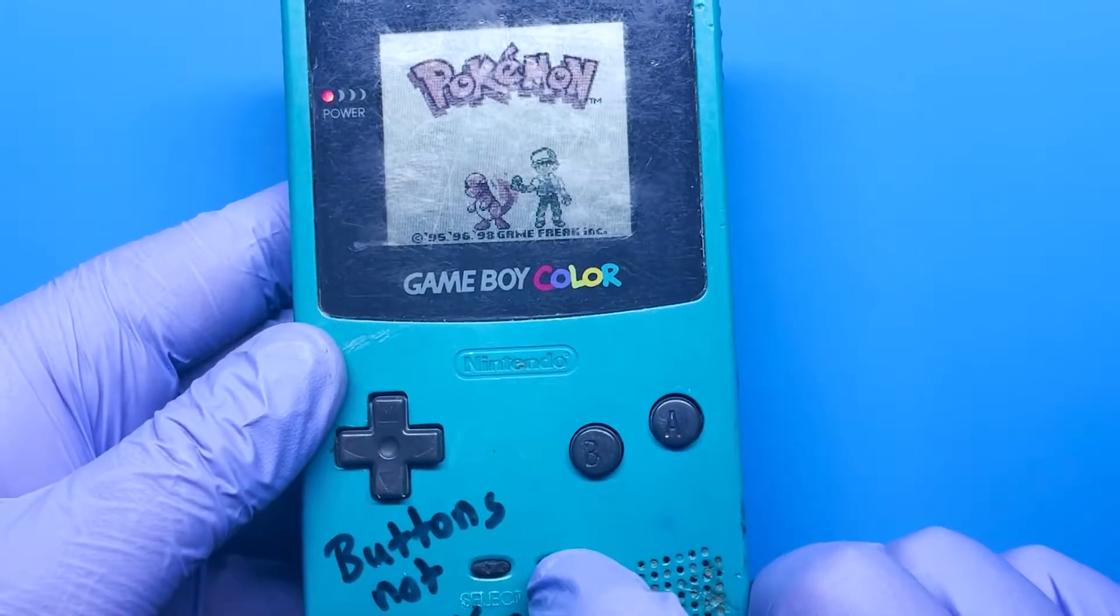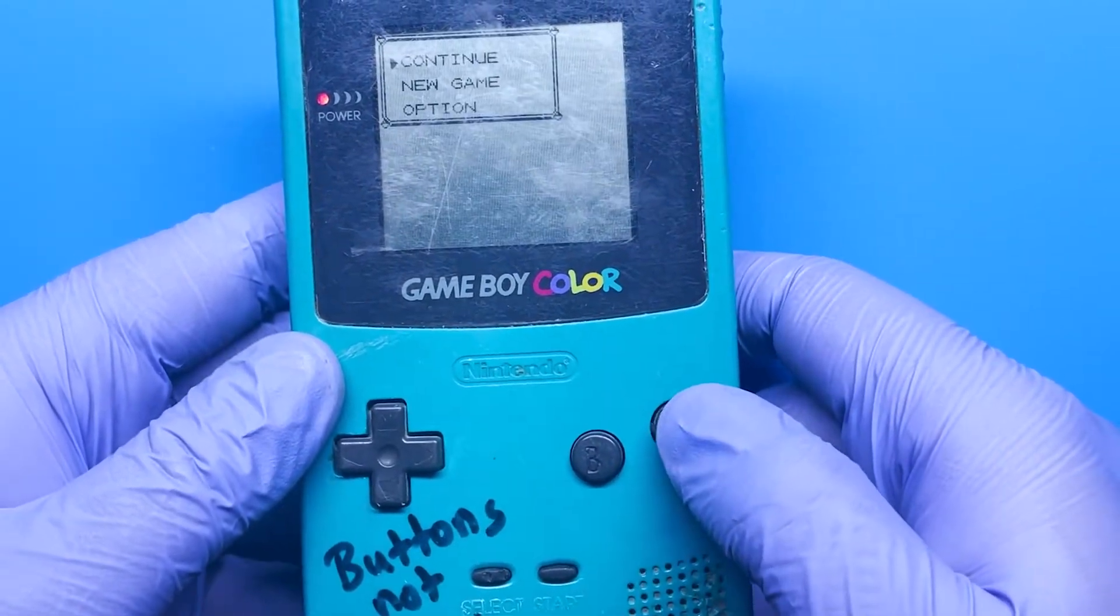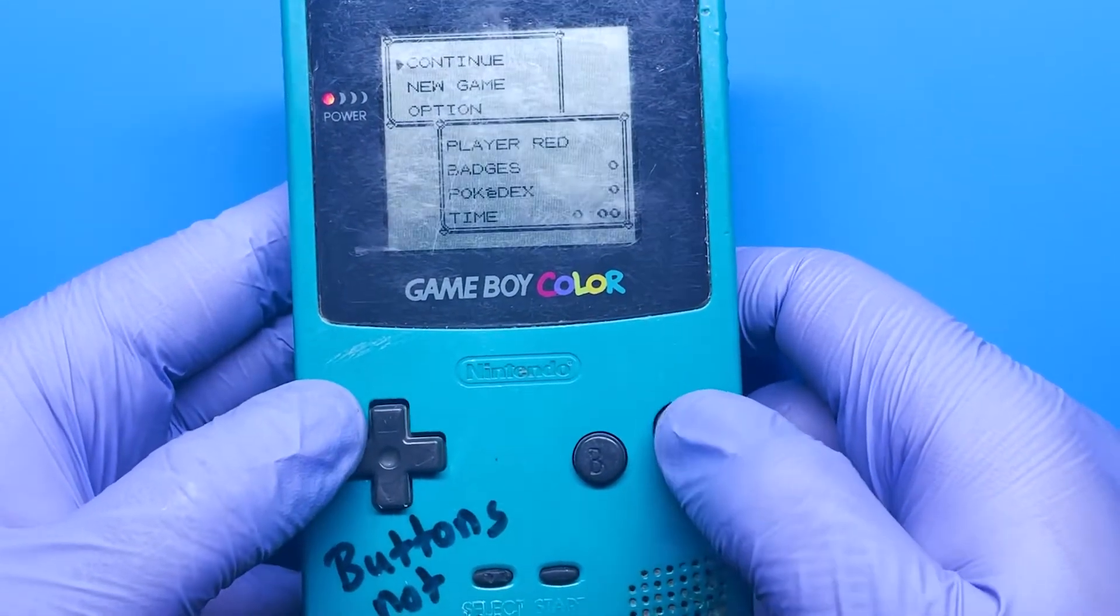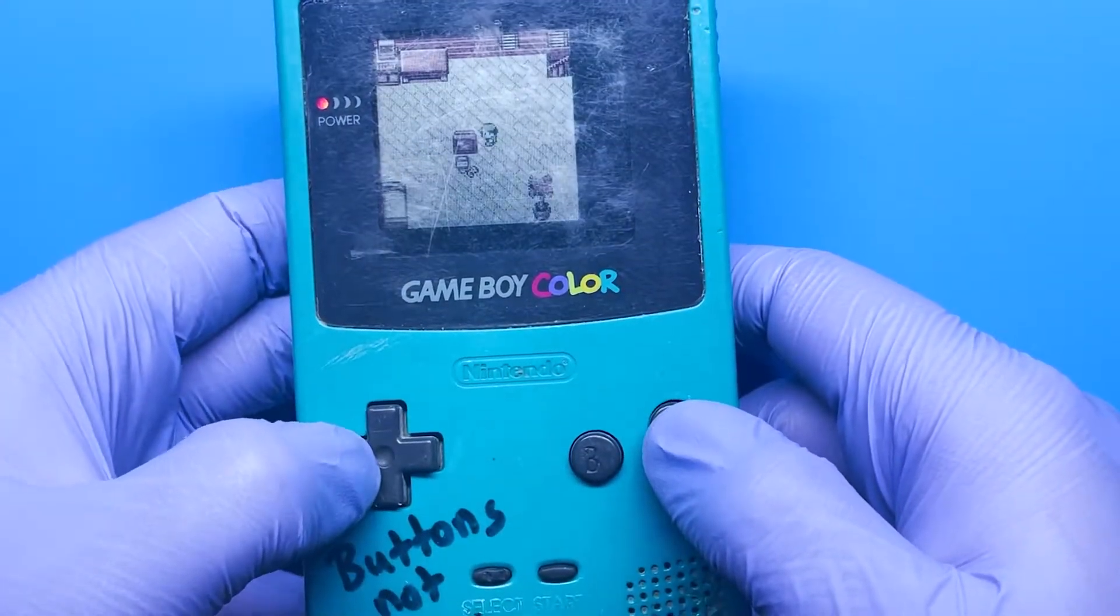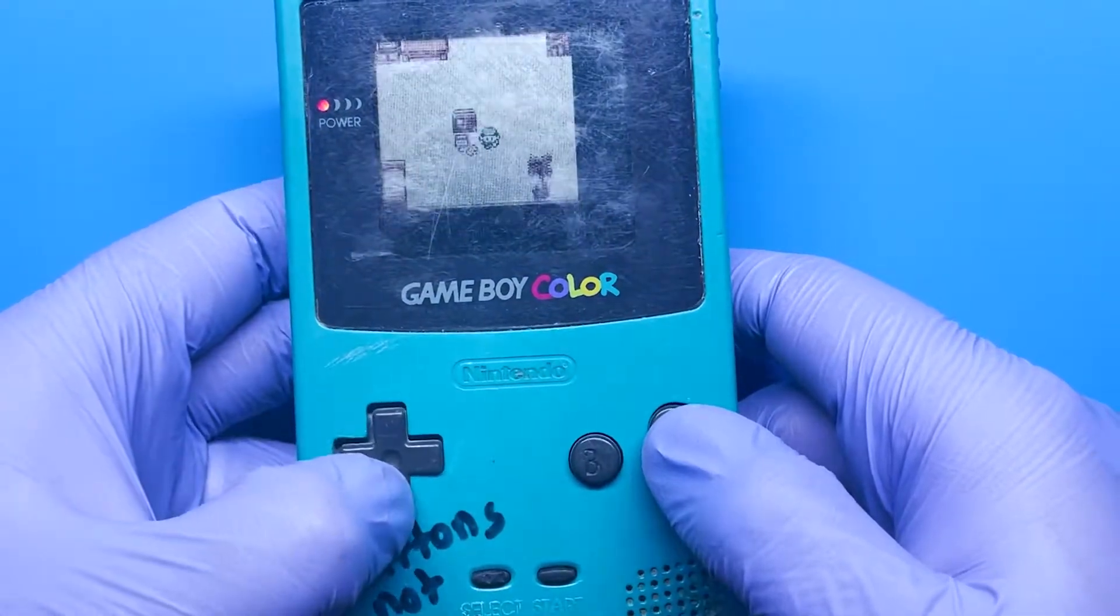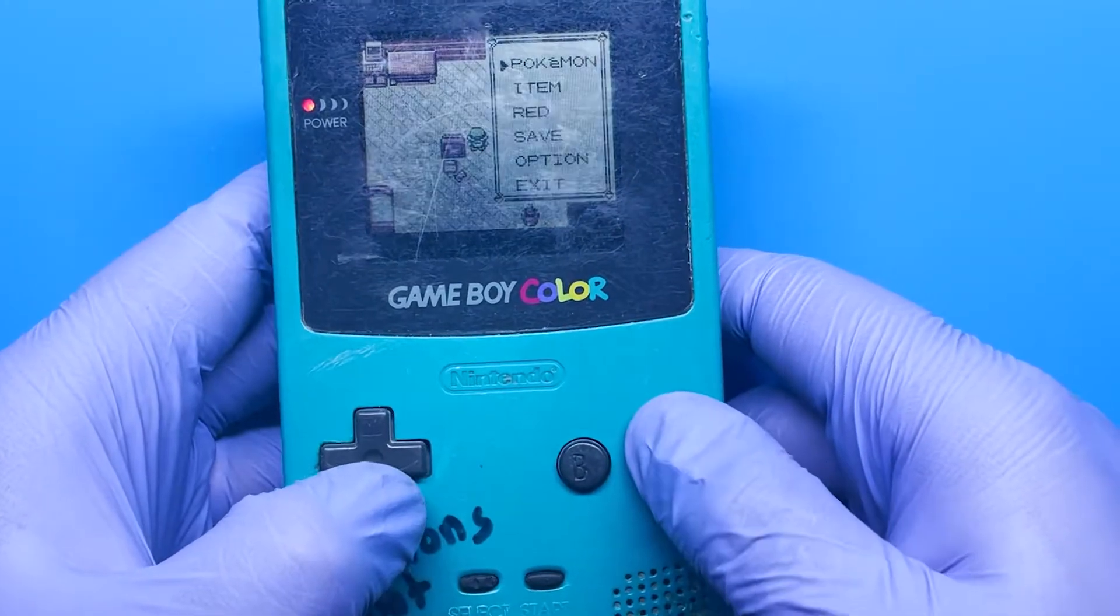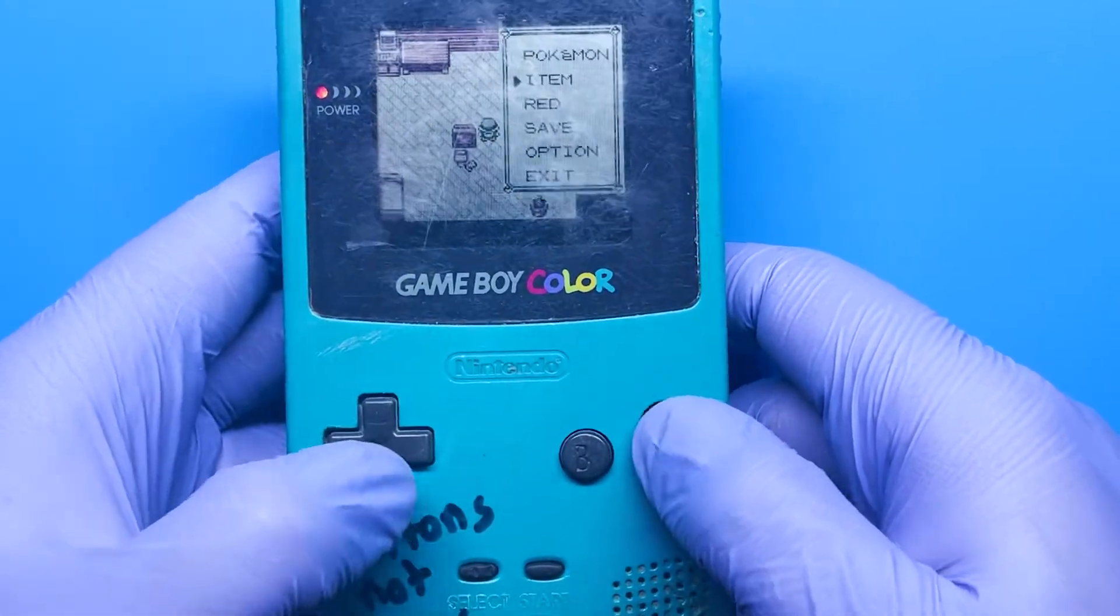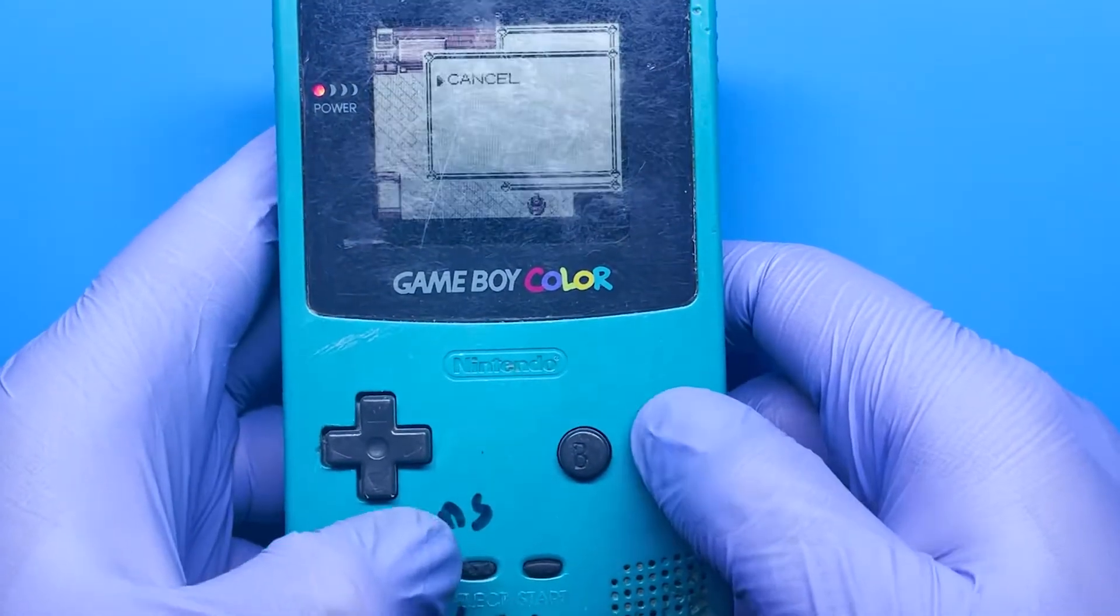Okay, it looks like the start button seems to be working again. The A button's a little bit hard. The clap button's a little bit hard as well. Start works. And select seems to be working.